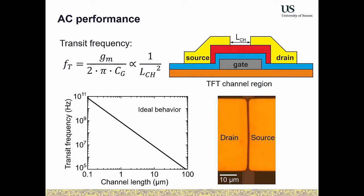The transit frequency can be easily calculated from transconductance and oxide capacitance, two parameters obtainable from DC performance. It depends on 1/(channel length)², which is exactly why Moore's law gives faster transistors every year. Using this equation with our transistor parameters, for a reasonable 1 µm channel length we can expect frequency performance in the range of hundreds or even thousands of megahertz — which sounds very promising.